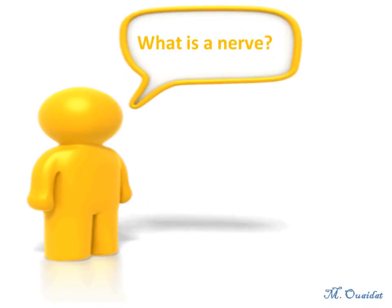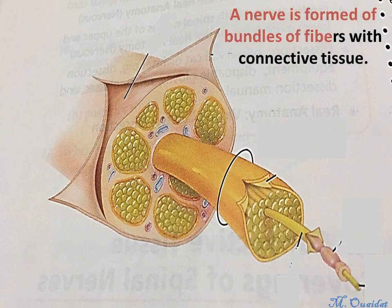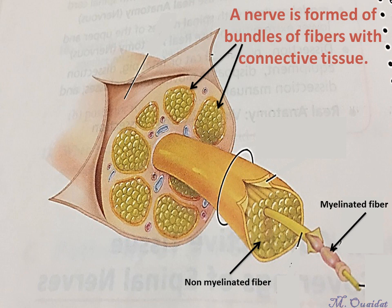What is a nerve? A nerve is formed of bundles of fibers with connective tissue. As you can see in the bundle, we can find both myelinated fibers and non-myelinated fibers at the same time, though sometimes the bundle contains only myelinated fibers or only non-myelinated fibers.